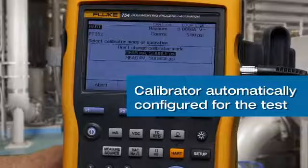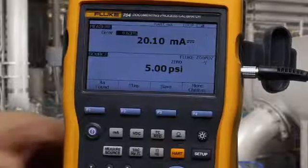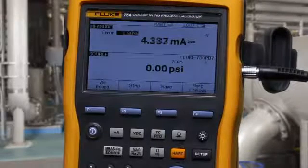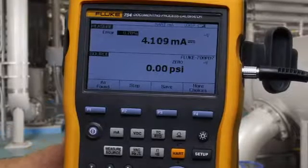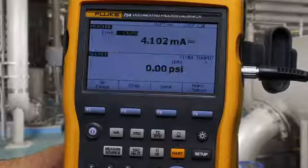Select measure milliamp source PSI. Vent the pump to atmosphere. Make sure you have a good zero. Then select clear zero to zero the pressure module.